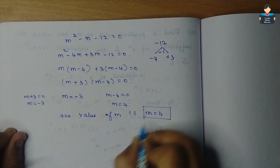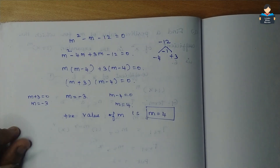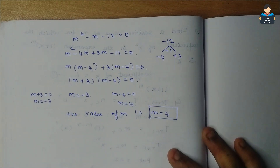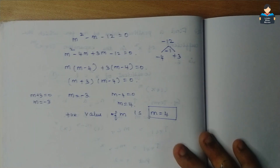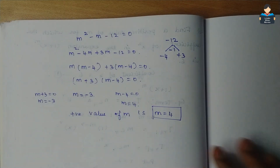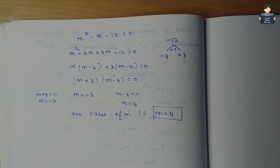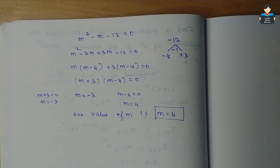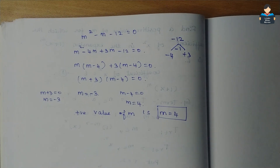So the final answer is m = 4. With this sum we complete the 8th chapter. In the next video we will start the next chapter. Please like, share, and subscribe. Thank you.